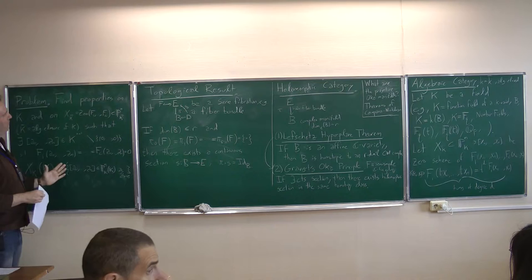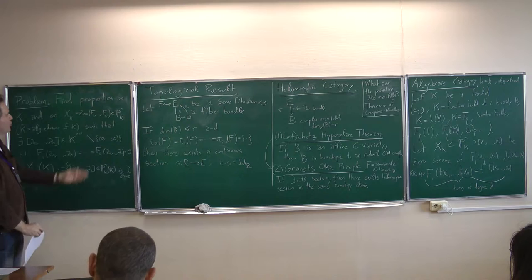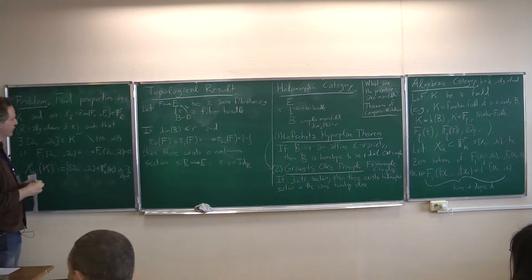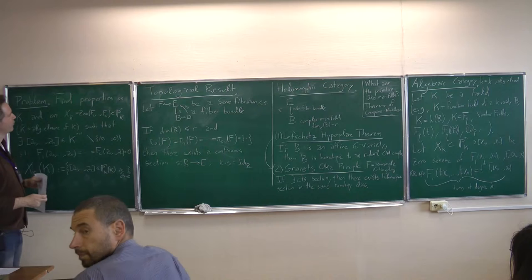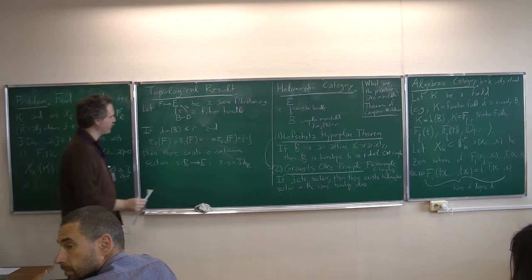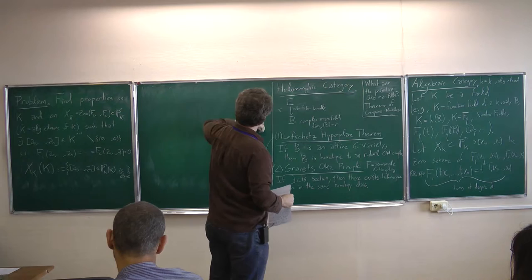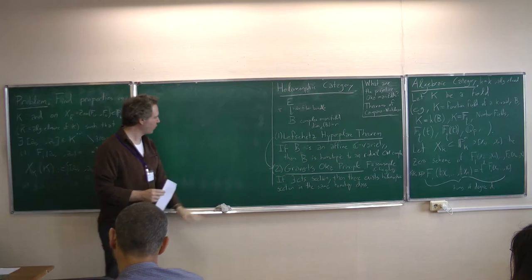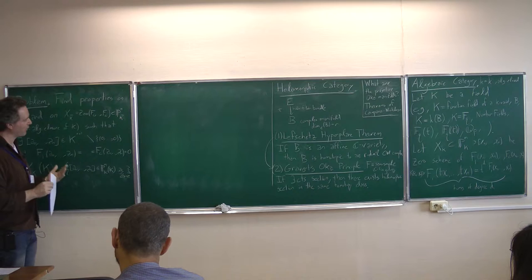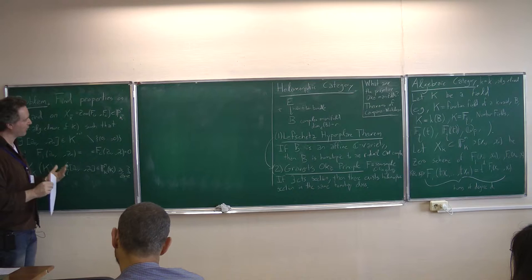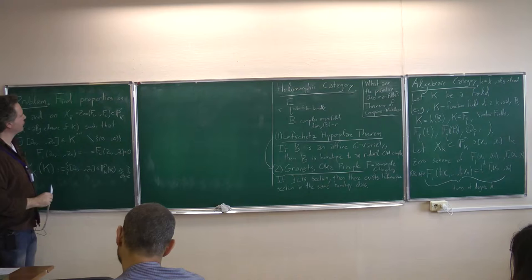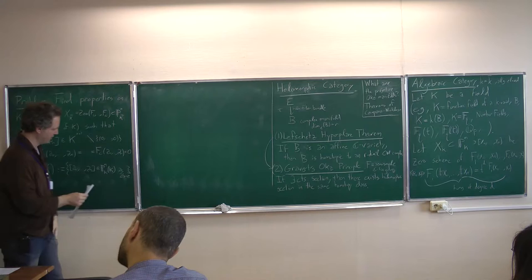This is impossible to answer in full generality — if K is a number field and you ask for a computer program that given the coefficients tells you whether there's a point, that's impossible. It was one of Hilbert's problems; finally Matiyasevich proved there is no such program. But the idea is to restrict to special kinds of fields and look for sufficient conditions so that there are points. We're not asking for necessary and sufficient conditions — that would be impossible — but if we just want sufficient conditions, we might write down interesting geometric conditions on X and conditions on K.